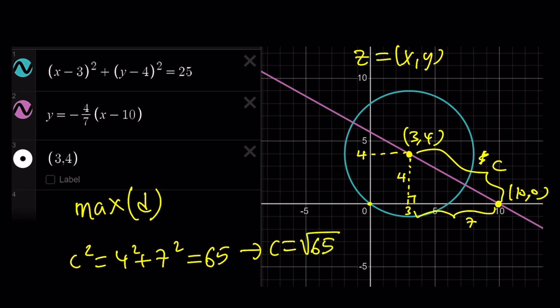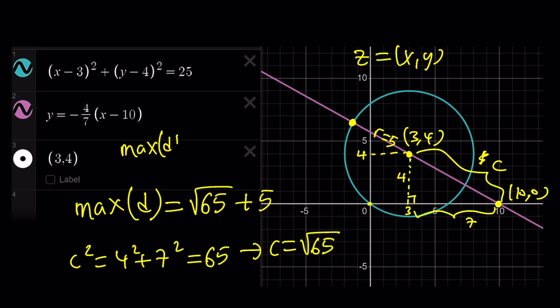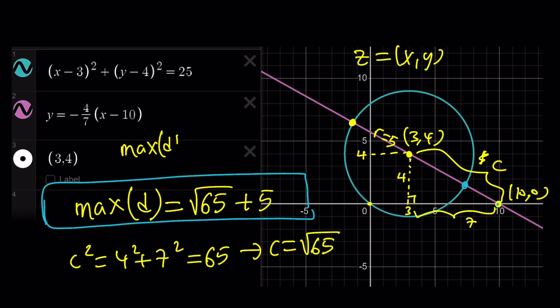The square root of 65 is pretty close to 8. But I'm looking for the maximum distance between the farthest point on the circle and 10 comma 0, so I just need to add the radius, which is 5. Therefore the maximum distance is c plus 5, which equals 5 plus the square root of 65. That's the answer — 5 plus √65.